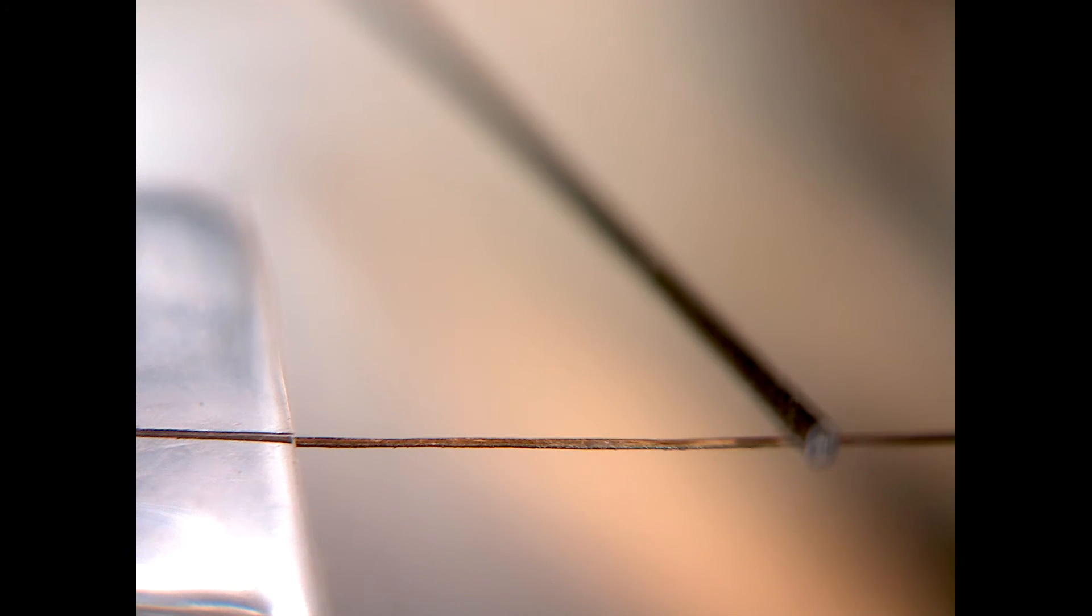We can do a similar test using the micro scale system on a human hair. In this case the displacement is about 0.2 millimeters and the peak load is about 30 micronewtons so only about one millionth the load used to bend the popsicle stick.